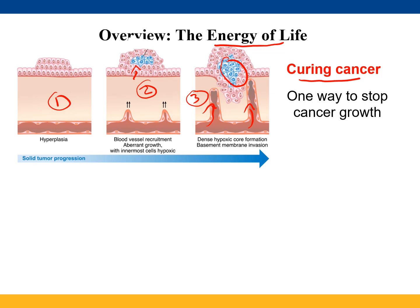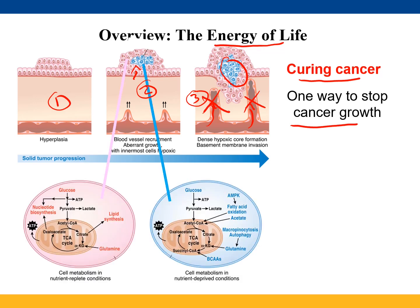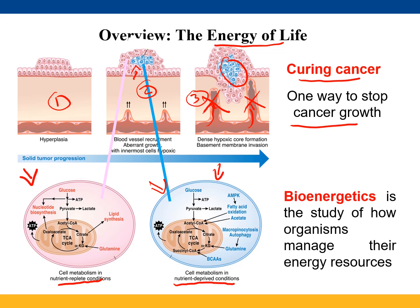One way to stop cancer is to remove the energy sources it has. If we prevent that process from taking place, it is possible to make the cancer starve and stop growing. This is a rapidly growing field. Here in pink you see the metabolism of the epithelium surrounding the cancer, and in blue you can see how the metabolism changes in cells that display cancer. The main idea is that studying the relationship between energy and life has big implications for understanding multiple diseases, particularly cancer.